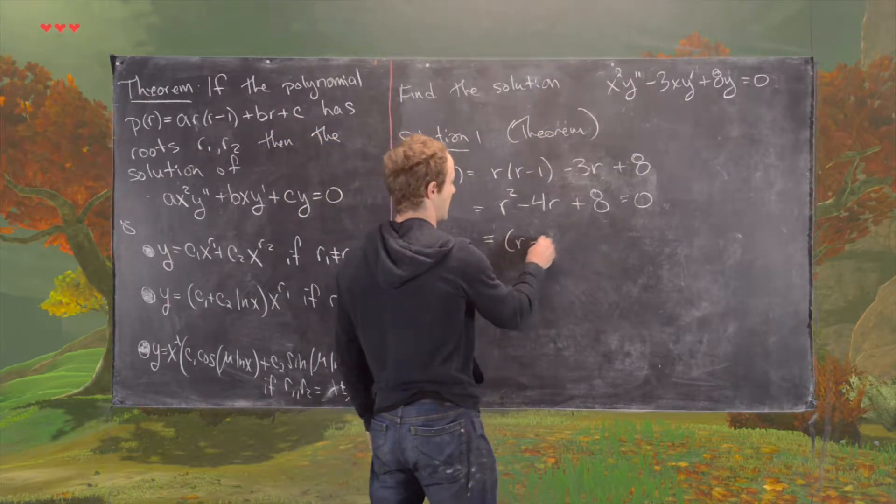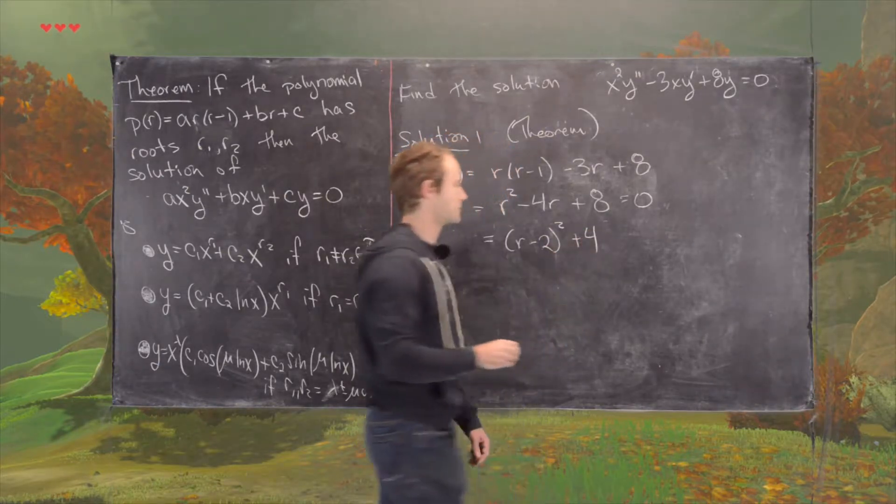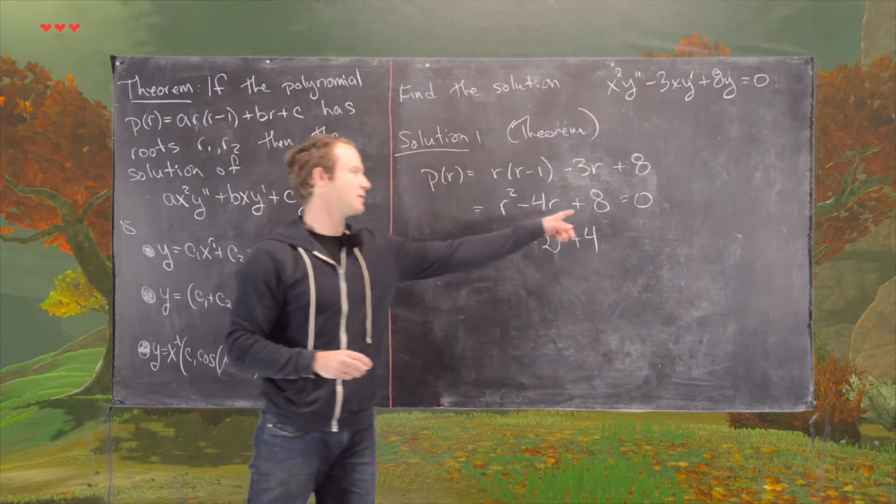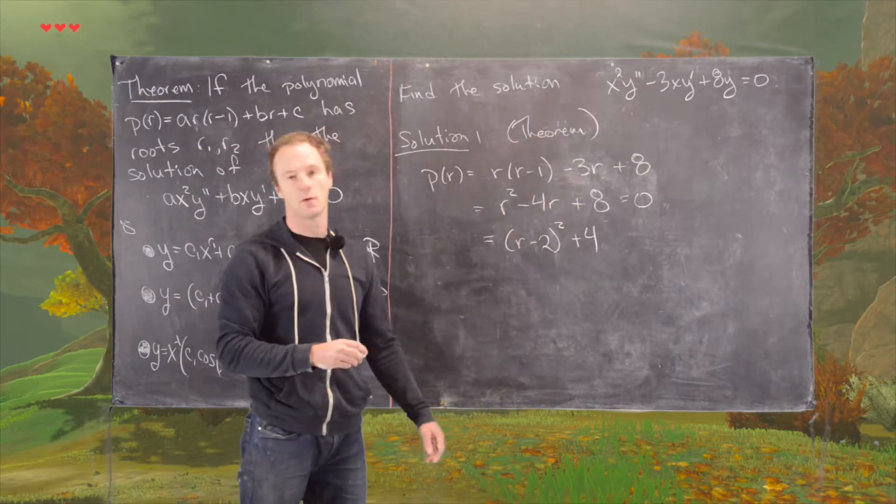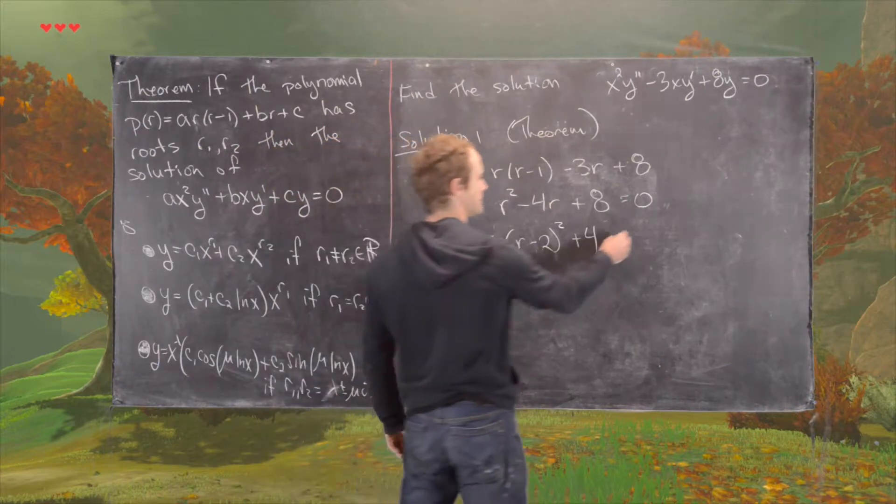We have R minus 2 squared plus 4. So what did we do? We split the 8 into two 4s, and that gave us a perfect square binomial and a leftover 4.